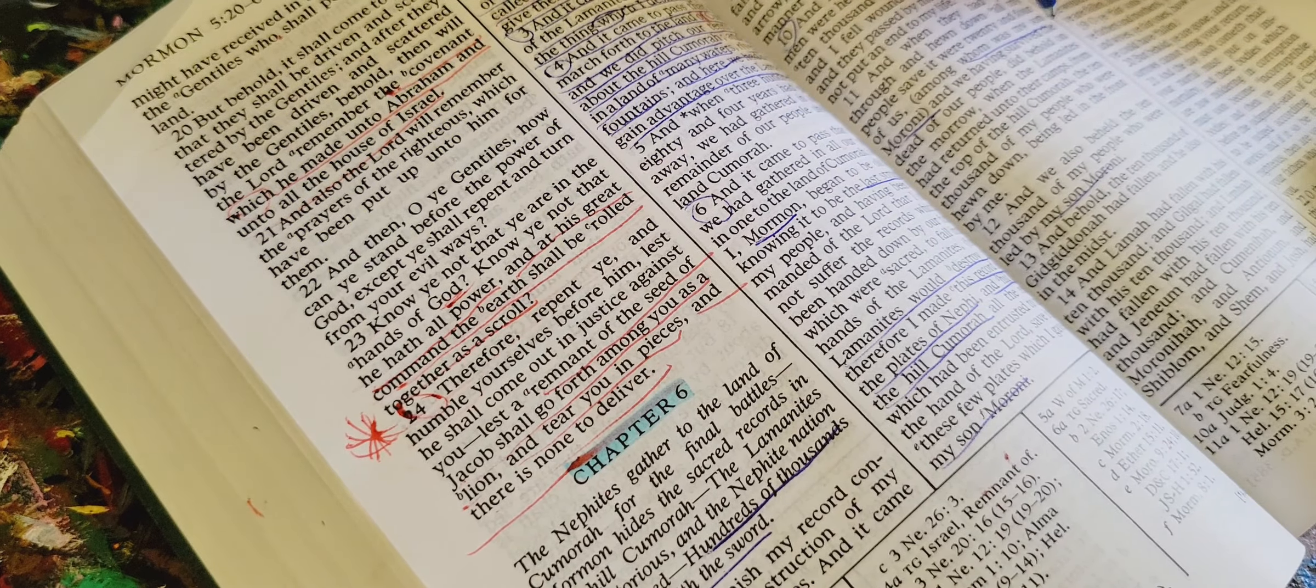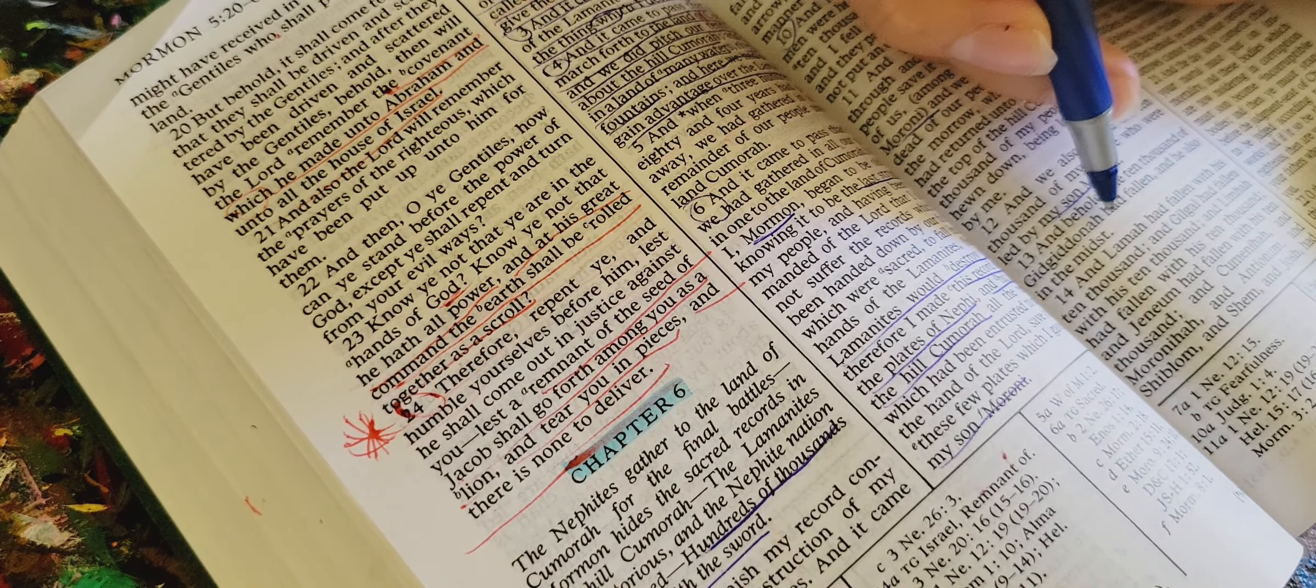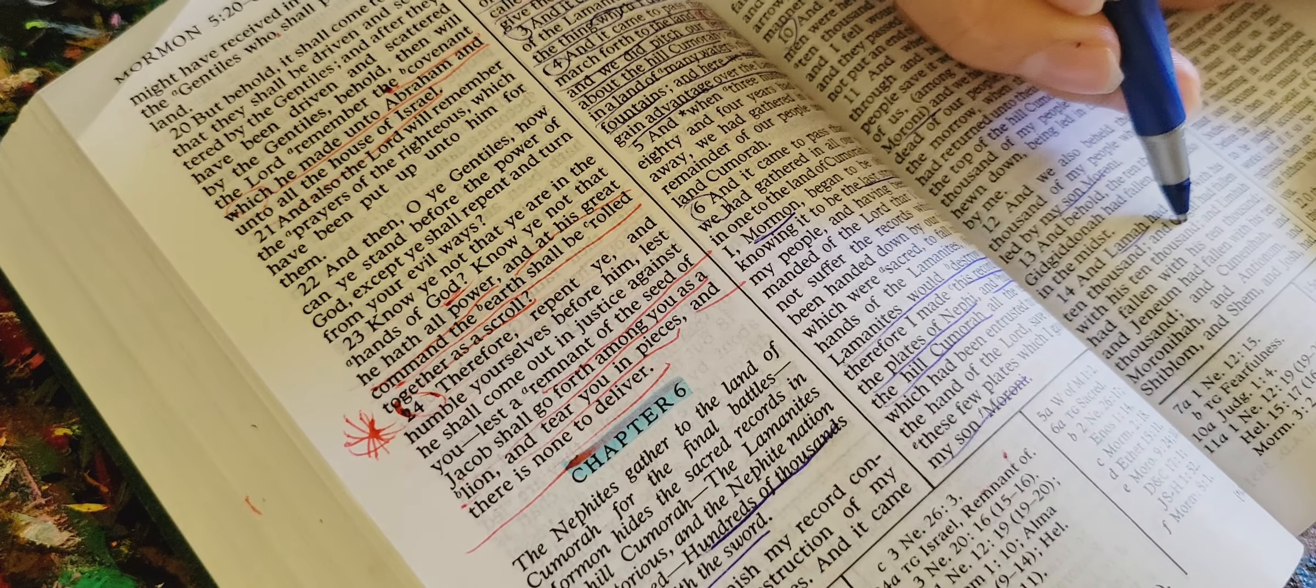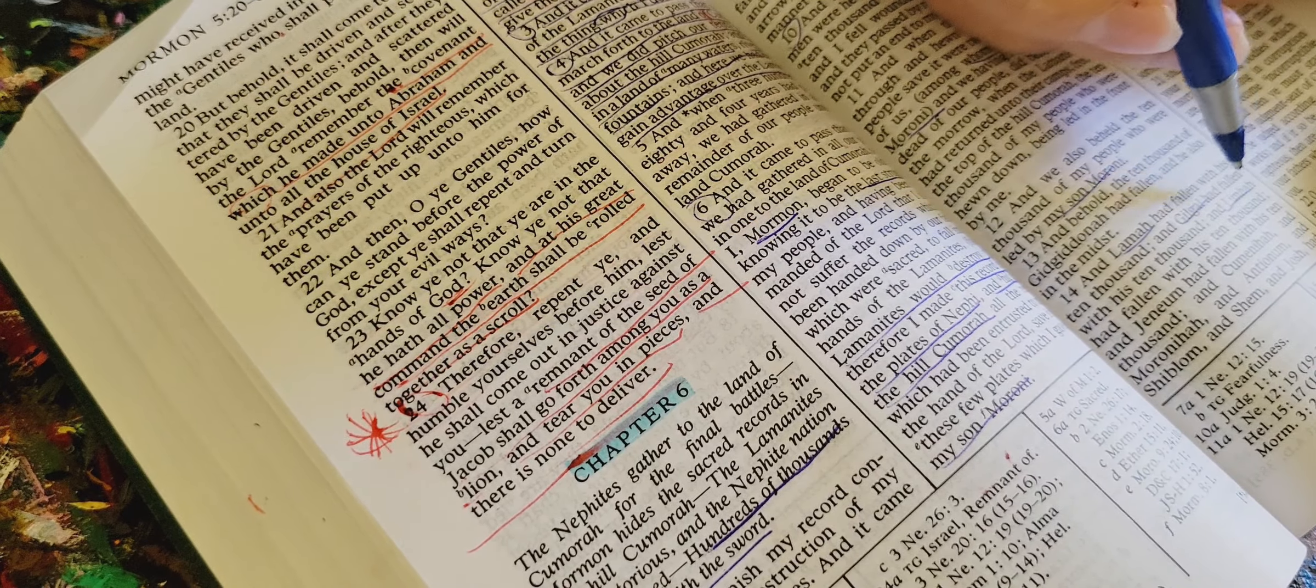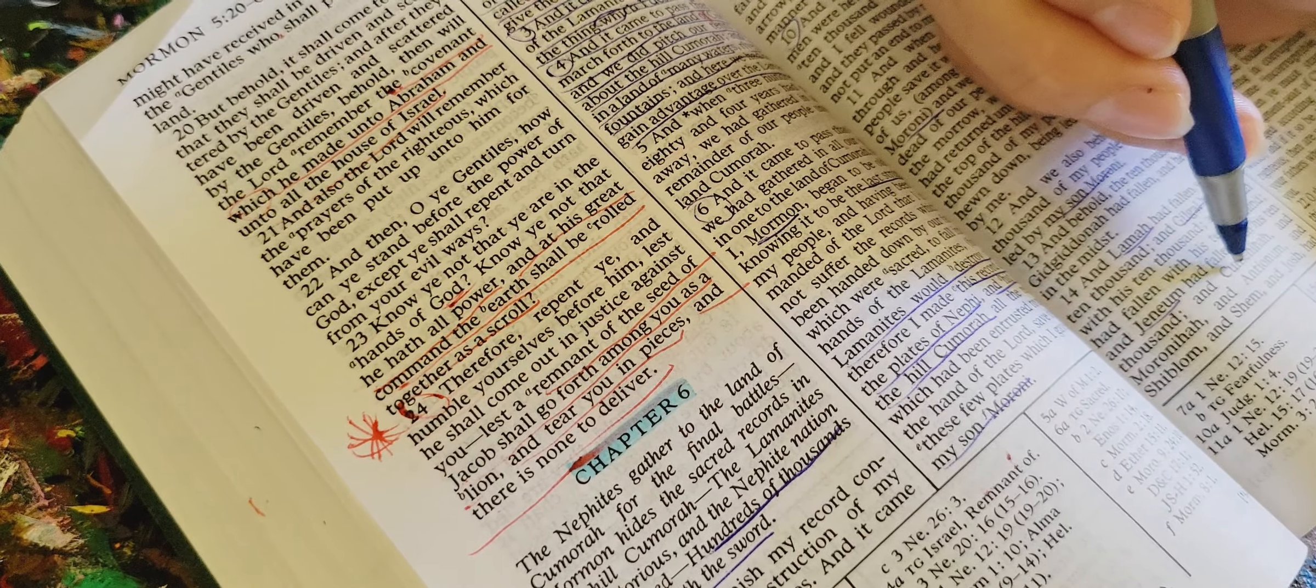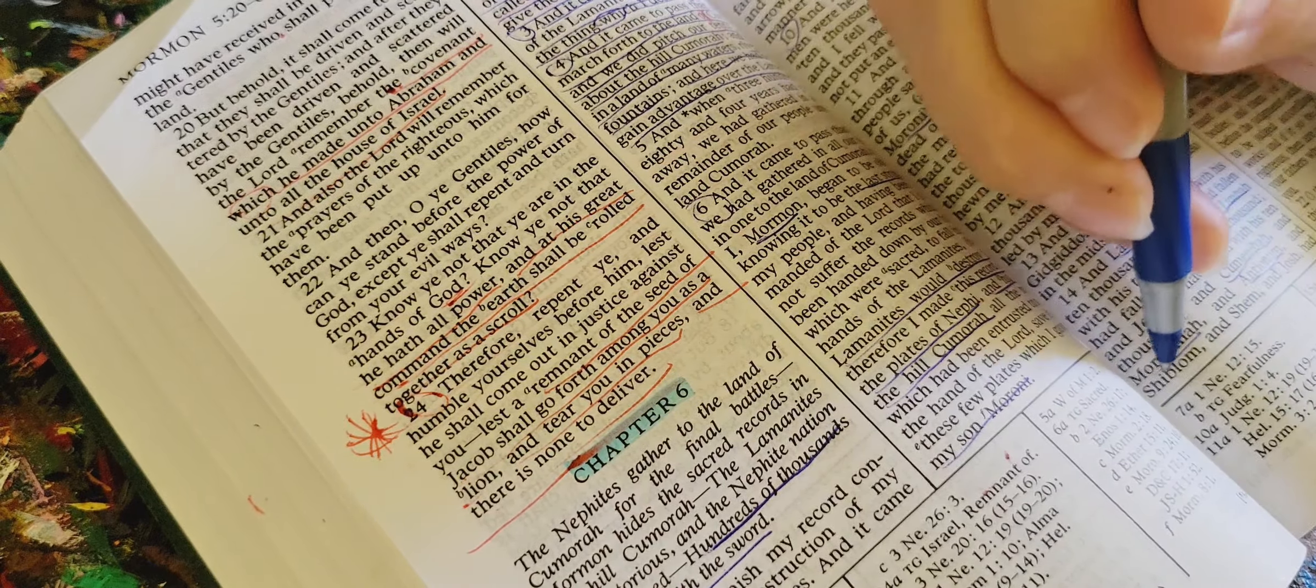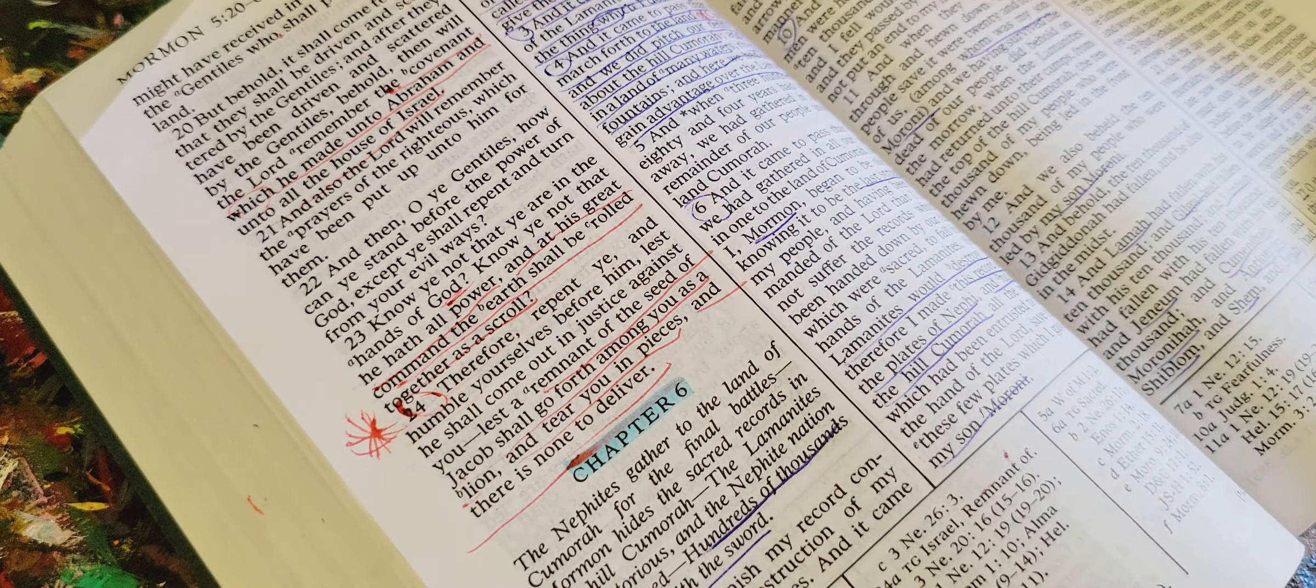And behold, the ten thousand of Gid, Gidona, had fallen, and he also in the midst. And Lama had fallen with his ten thousand, and Gilgal had fallen with his ten thousand, and Limna had fallen with his ten thousand, and Janem had fallen with his ten thousand, and Kumaniha, and Moroniha, and Antonium, and Shiblom, and Shem, and Josh had fallen with their ten thousand each.